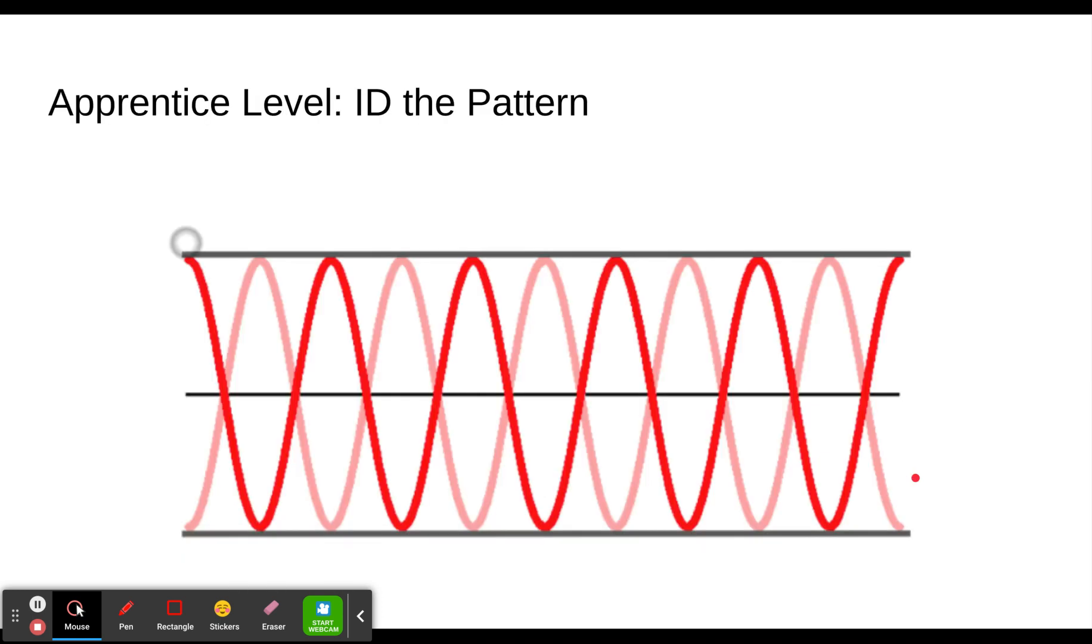When you get to the apprentice level, first of all, you'll notice that the ends are anti-nodes, so that's a difference from what you saw in strings. But here we just count the nodes. So there's one node, two nodes, three, four, five, six, seven, eight, nine, ten. This is the tenth harmonic of this flute or other open-ended instrument.